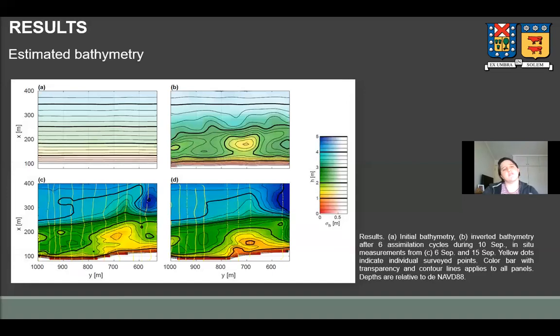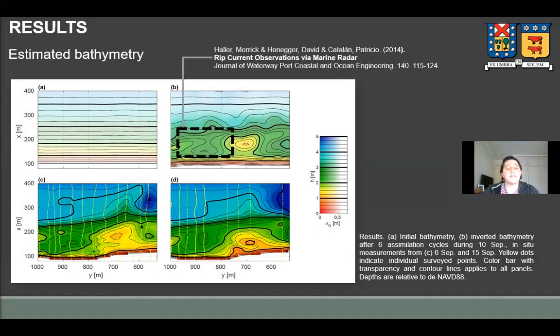And figure B shows the final estimate after data assimilation. First, it extends the ability of the system to retrieve the subaquatic orientation of the beach in the form of a near shore crest that was initially absent. But most notably, it correctly estimates the position and amplitude of the sandbar and its interruption by a rip channel where Haller et al. 2014 observed rip currents during low tide.